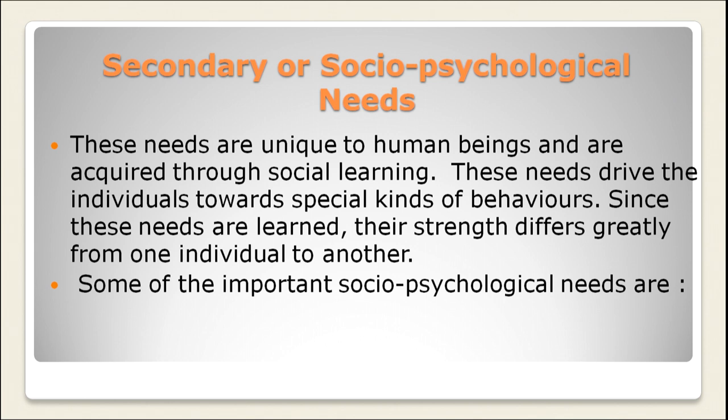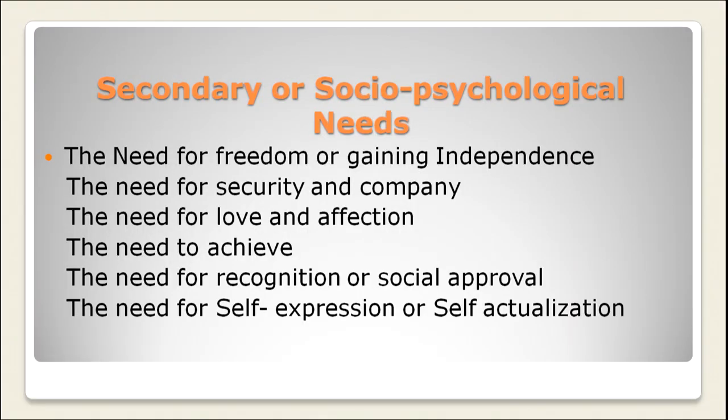Secondary or socio-psychological needs are unique to human beings and are acquired through social learning. These needs drive individuals towards special kinds of behaviour. Since these needs are learnt, their strength differs greatly from one individual to another. Some important socio-psychological needs are: need for freedom or independence, need for security, need for company, need for love and affection, need to achieve, need for recognition or social approval, and need for self-expression or self-actualization.